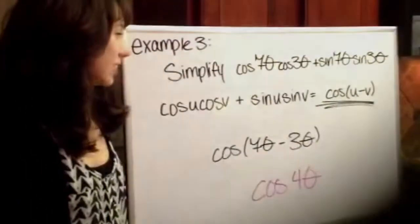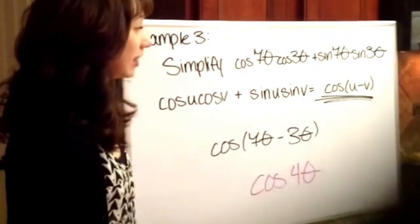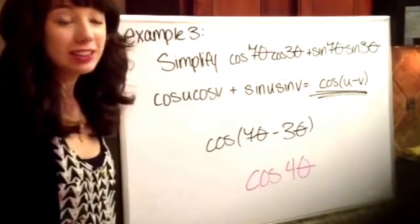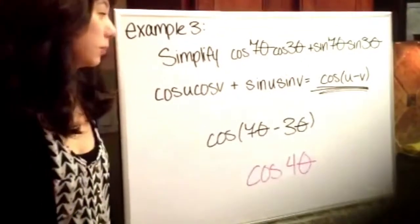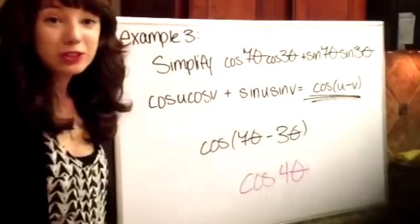Final example, we have simplify cosine 7 theta multiplied by cosine 3 theta plus sine 7 theta multiplied by sine 3 theta. Now don't let the theta scare you. It's the same problem that we did in the last example.